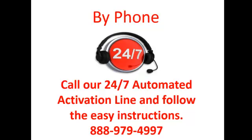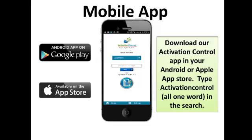Or you can activate by downloading our Activation Control app, available on Android or Apple App Store. Type 'activationcontrol' — all one word — in the search to get the app. You simply scan the SIM card on the app and activate. It's very easy to use.